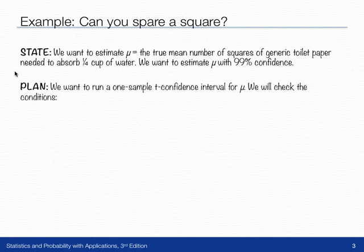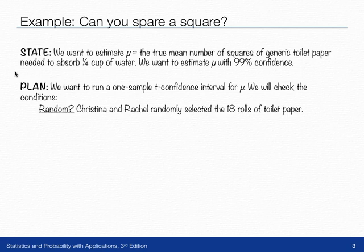Now we're going to plan. We want to run a one-sample T confidence interval for mu, but first we have to check the conditions. There are two of them. The first was, was this selected in a random way? Christina and Rachel, it does say, randomly selected the 18 rolls of toilet paper, so we're good with that one.